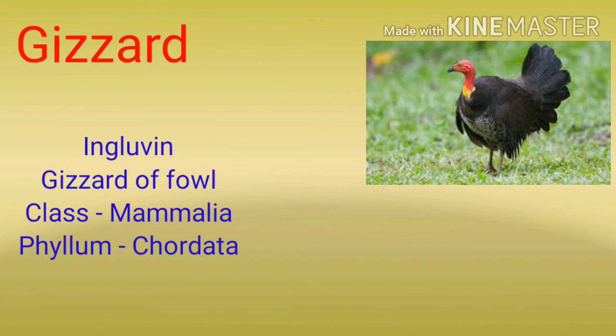अब हम बात करते हैं gizzard से बनने वाली medicine की। Gizzard वो part है bird के stomach का जहाँ पर जब वो खाना खाते हैं, वो टुकड़ों में divide हो जाता है digest होने से पहले। Gizzard से बनने वाली medicine का example है Ingluvin, common name है gizzard of fowl, class Mammalia और phylum Chordata।